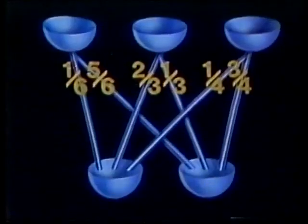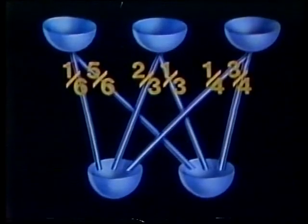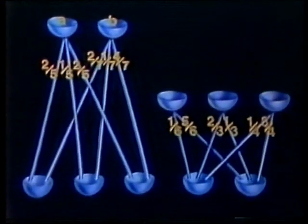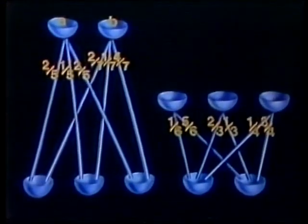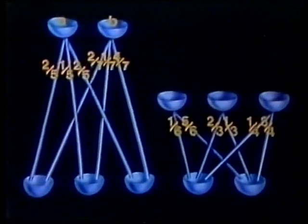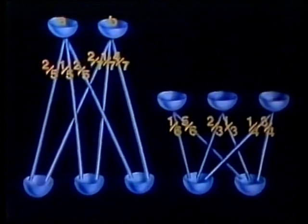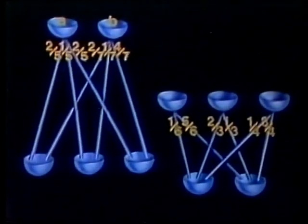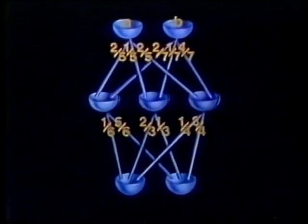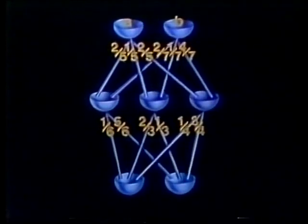I'd better begin by telling you what I mean by combinations of networks. Suppose we have another network, this time with three inputs. And here's our first network again. In both networks, there's a single pipe from each inlet to each outlet. Now suppose that what comes out of the left goes into the three inputs of the right. This is what I mean by a combination of networks.